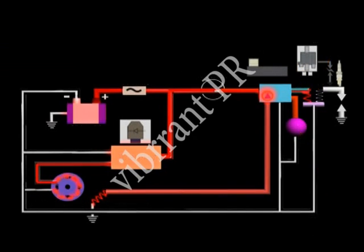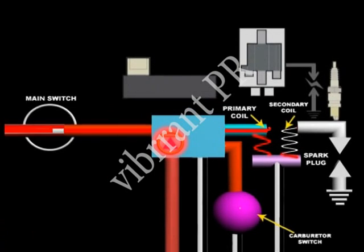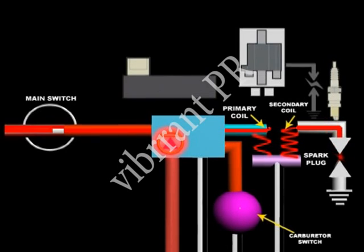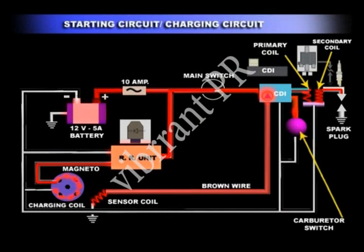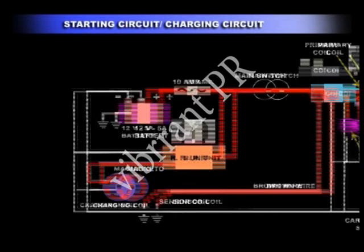The current then flows in the primary winding of the high tension coil. Now high voltage is induced in the secondary winding of the high tension coil, which delivers high voltage at the spark plug electrodes. The ignition timing is precisely controlled by the signals received from the carburetor switch.